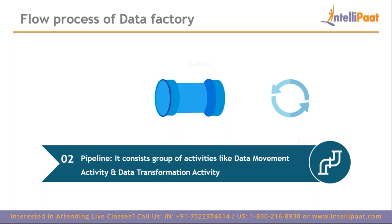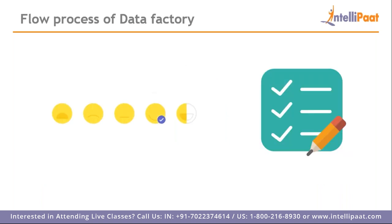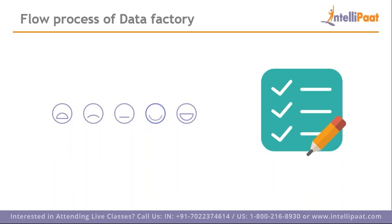Through the pipeline, you perform operations on your data — data movement or data transformation. Whatever automation process you perform in data factory can be automated in the pipelines themselves. You can design the data flow, design the linked services, and attach them all in the pipeline. A pipeline consists of a group of activities such as data movement activity and data transformation activity. For our movie example, we want a list of movies reviewed on the basis of rating — whether worse, average, or good.